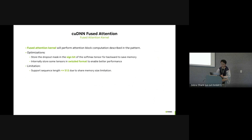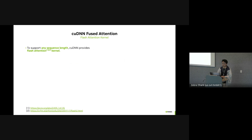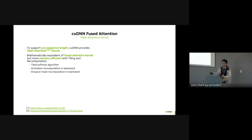A key limitation is that the fused attention kernel only supports sequence lengths smaller than 512. The reason is that cuDNN tries to do the whole computation in a single kernel, storing some intermediate tensors in shared memory. Due to shared memory size limitations, it only supports sequence lengths up to 512. To address that limitation, cuDNN has a different kernel called the flash attention kernel.